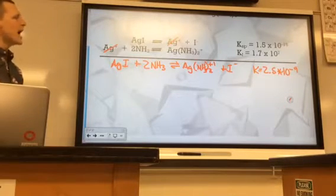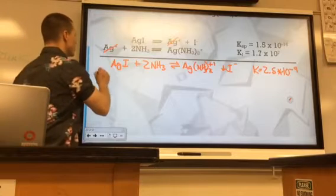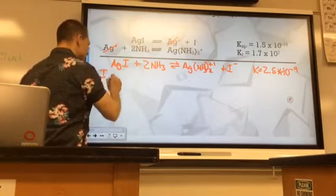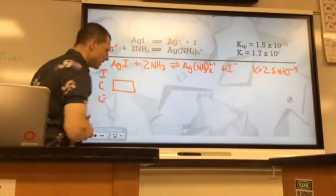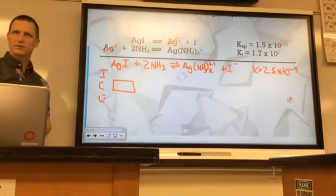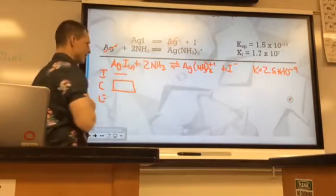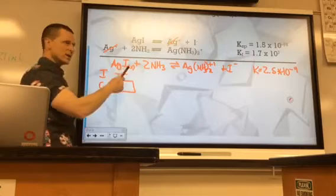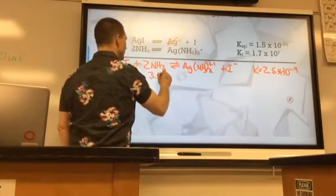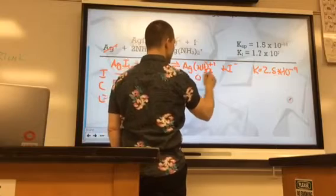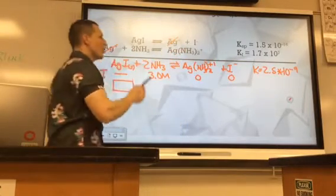Okay. So now we need to make an ICE table. The question, remember, is what is the solubility, so this thing right here is what we're going to try to solve for. Initially, what do we have here? Remember, this is a solid so that doesn't have a concentration. The ammonia does though. There was 3 molarity. And then initially, the silver-ammonia complex, there is none. And iodine, there is none.